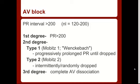A first degree AV block is just that — a wide PR greater than 200. For second degree, you have two types: Type 1 and Type 2. Type 1 is also known as Wenckebach or Mobitz Type 1. In Type 1, you're going to have progressively prolonged PR intervals — getting longer and longer — until finally one is dropped. In Type 2, also known as Mobitz Type 2, you just have intermittently dropped QRS complexes after your P waves.